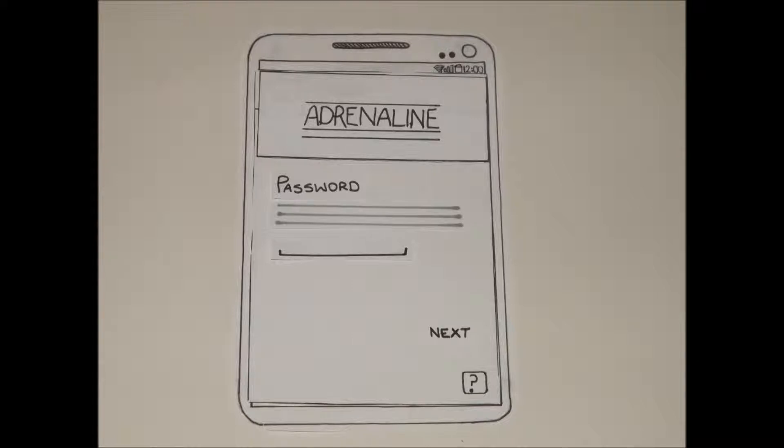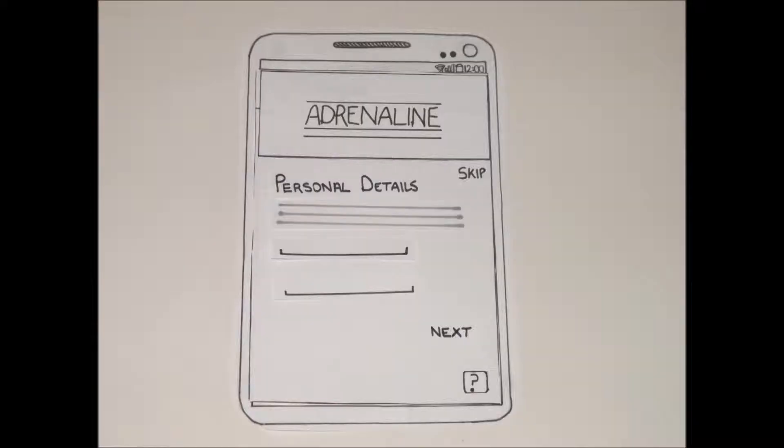Your password protects all your details. Your last option is your personal details — the information which populates your profile — things like height, width, and age, which determines your maximum and minimum heart rate when working out.